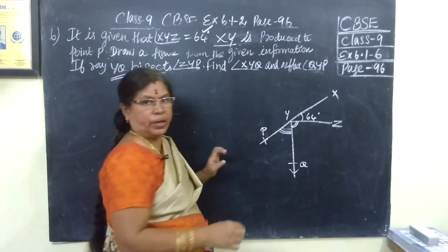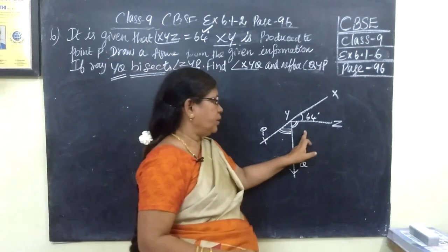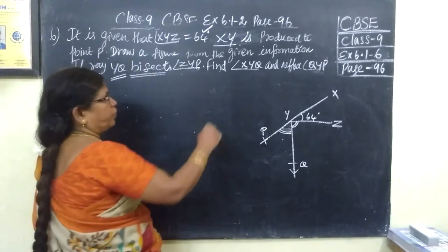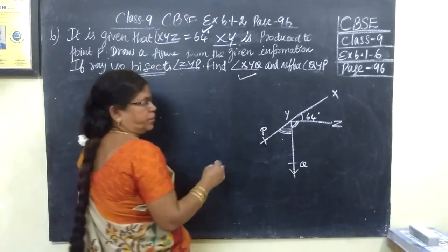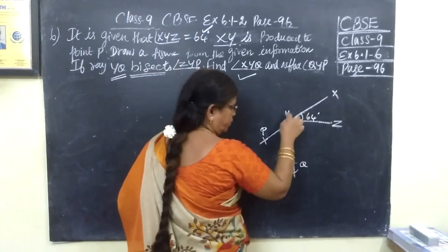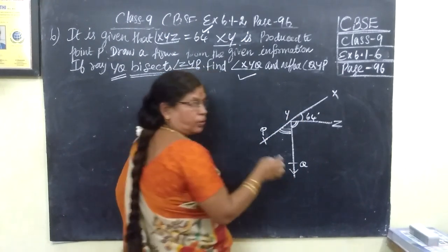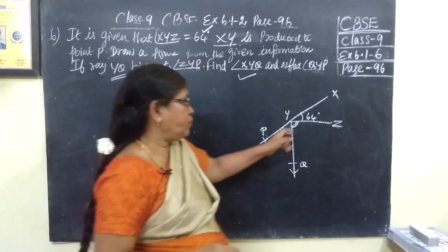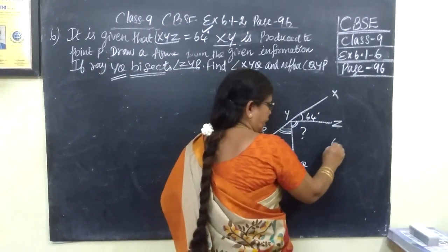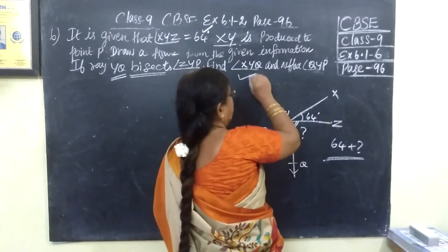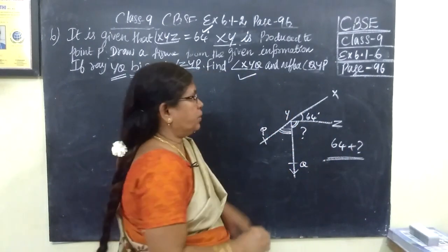Since YQ is the angle bisector, these two angles are equal and this is 64 degree. And you want to find XYQ. Which is XYQ. Already we know this is 64 degree. If you find this, you can add 64 plus this angle. You are getting the first question.